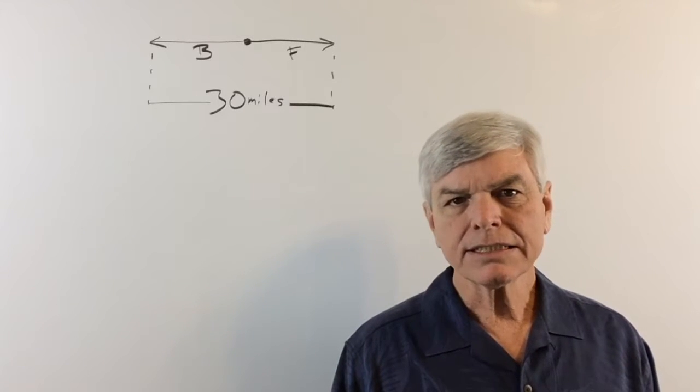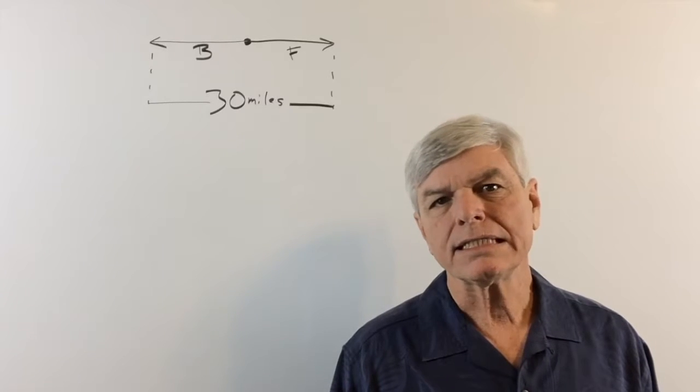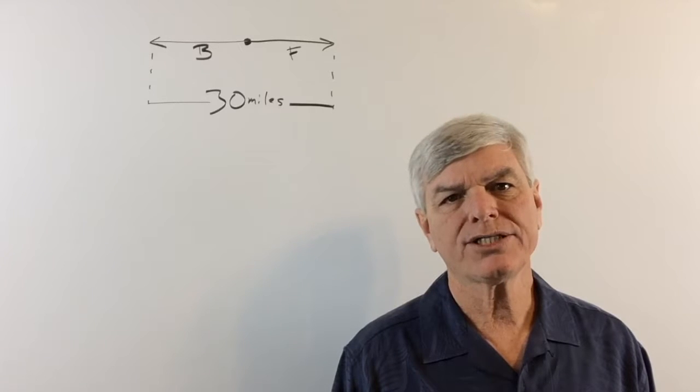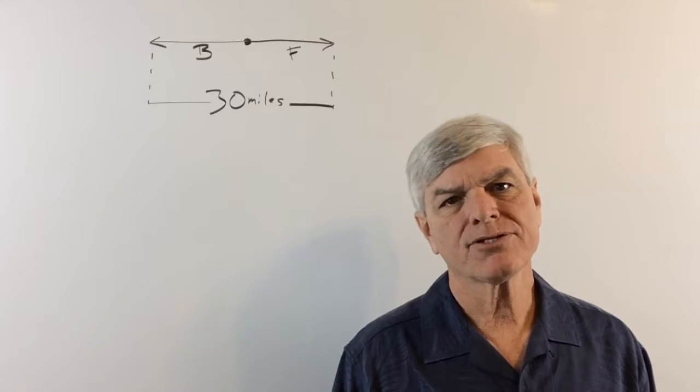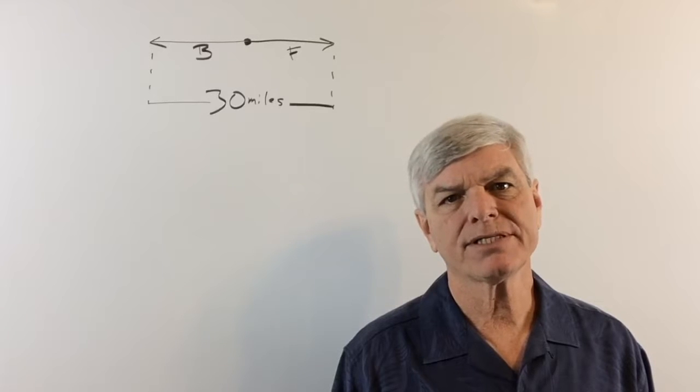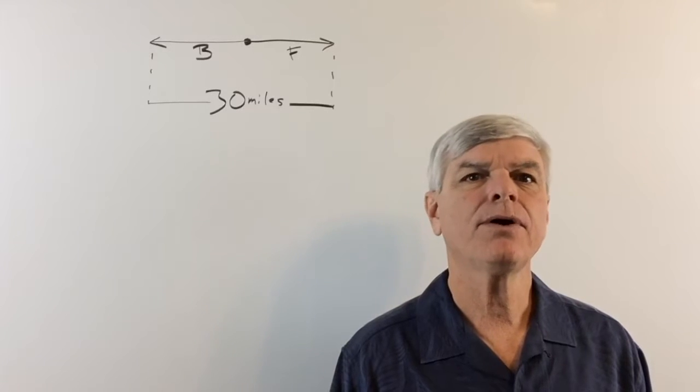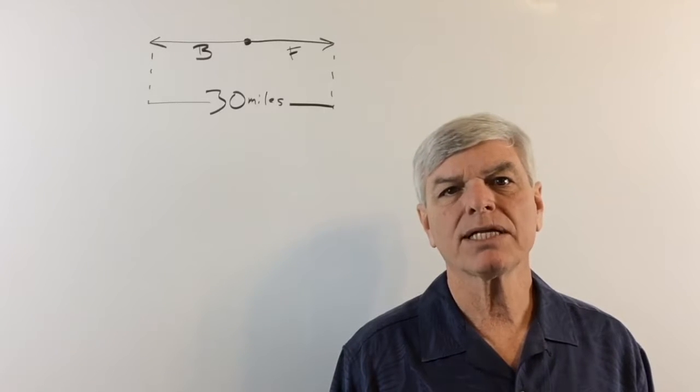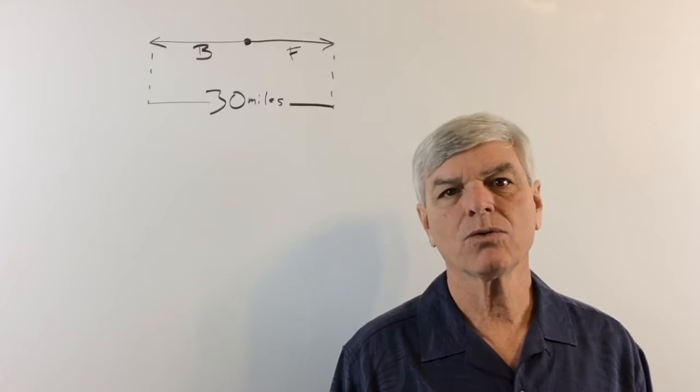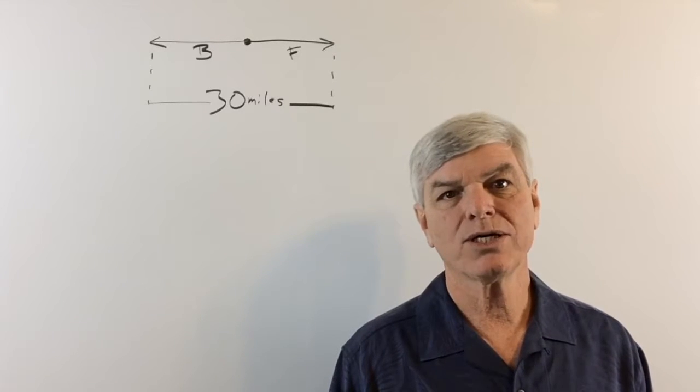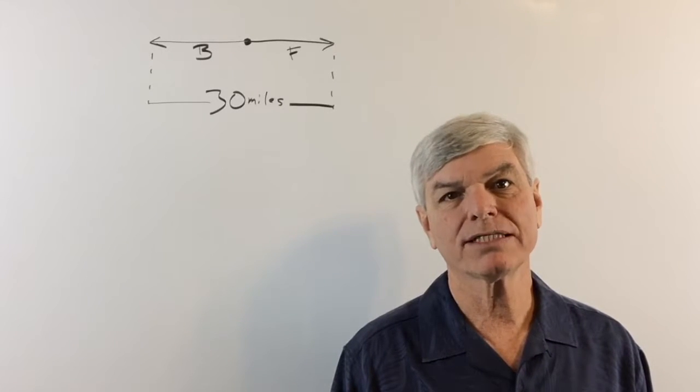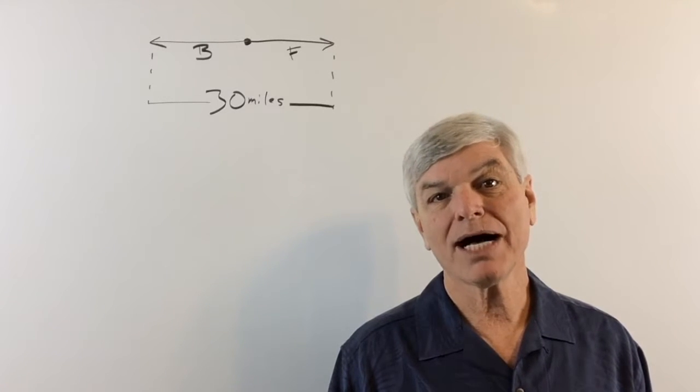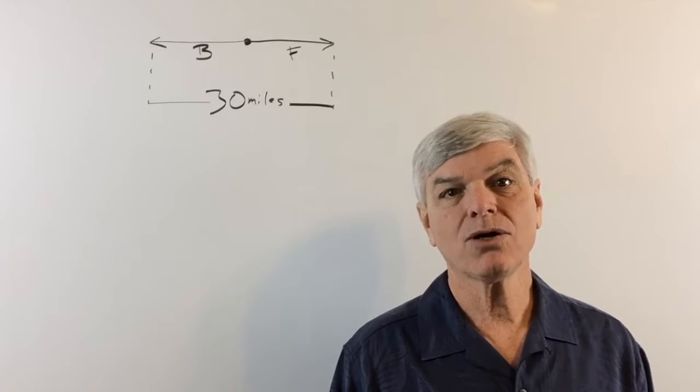Now, does this look similar to the other problem? Well, it is. In the other problem, they started at opposite ends and they worked toward each other. And in this problem, they're starting at the same spot and they're walking in opposite directions. And we gave you that as one of the clues that it was going to be D1 plus D2 equals D total. We don't know how far Bob is going to walk and we don't know how far Fred is going to walk. But we know that together, they're going to walk 30 miles. So that is going to be the D total.